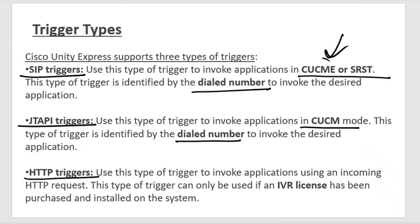The HTTP trigger is used to invoke an application using an incoming HTTP request, such as when accessing the user interface through a web browser. This trigger can be used if an IVR license has been purchased and installed on the system, since HTTP is the protocol used when interactive voice response (IVR) is in use.